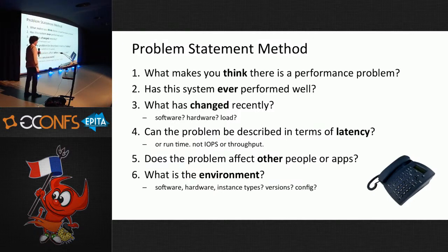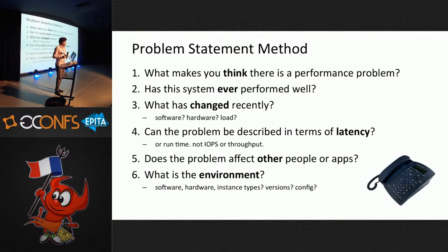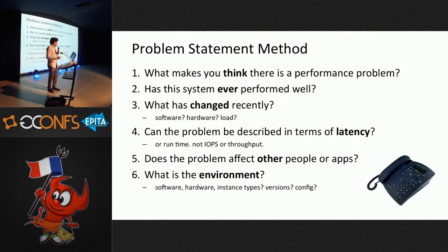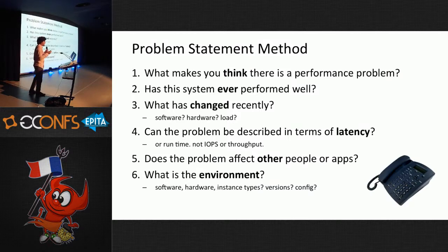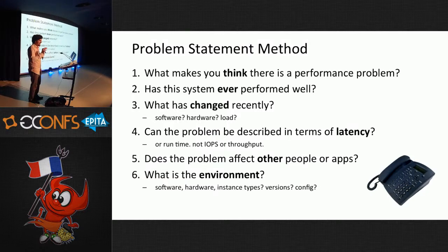Looking everywhere, I didn't see any changes to the system. Finally I asked, 'Has this system ever performed well?' The answer was, 'No, it's always been like that — for weeks. We only just thought about asking you.' The way they asked me was as though something had changed and broke. After that, I always remembered to ask: has it ever performed well? Can the problem be described in terms of latency? People often say 'my CPU utilization is high' — but is that a problem? It might be good; you're getting return on investment.